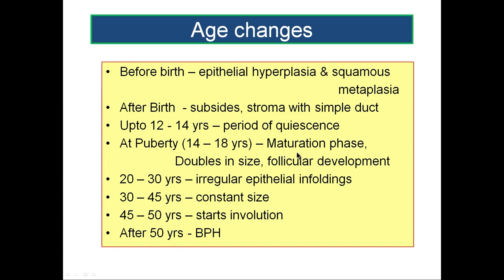At puberty, by about 14 to 18 years, it starts maturing — this is the maturation phase where the prostate doubles in size and there is follicular development. The follicular epithelium will start projecting into the lumen showing foldings. By 20 to 30 years of age, these foldings increase and become irregular epithelial infoldings, which is characteristic of the prostate.